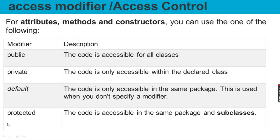The access specifier can also apply to attributes, methods, and constructors. When we consider attributes, methods, and constructors, the code is accessible for all classes when public is used. The code is accessible in the same package when default is used.